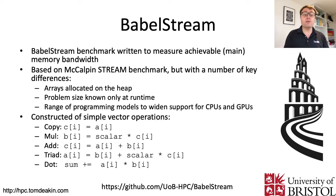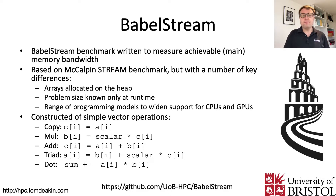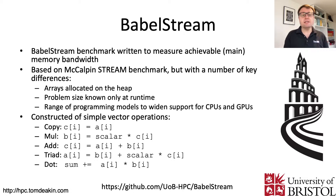BabelStream is a benchmark based on McAlpin Stream, which many of you will be familiar with. McAlpin Stream is a benchmark used to measure achievable main memory bandwidth. You have three large arrays resident in DRAM — or high bandwidth memory on a GPU — and it runs simple vector kernels to measure the sustained memory bandwidth achievable on a particular processor. BabelStream differentiates itself by allocating arrays on the heap, and the problem size is only known at runtime.